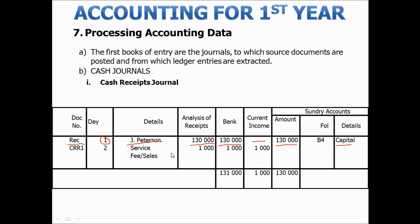In our second example, this was a cash receipt relating to a service fee or sales. Under the document number we have the receipt number — in this case CRR1. We record the day of the transaction and the details, and then under analysis of receipts the amount, in this case a thousand Rand. This was a thousand Rand coming into the bank account, and because this was a transaction affecting income and expenses, we will note it under the current income column for a thousand Rand.